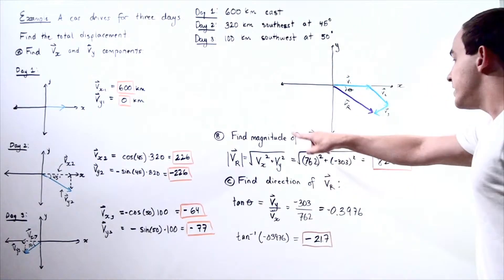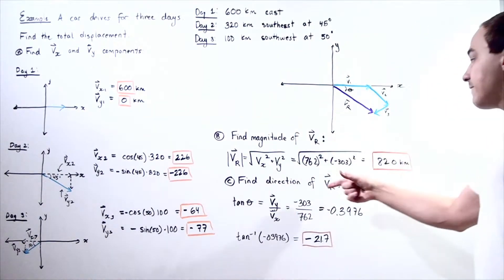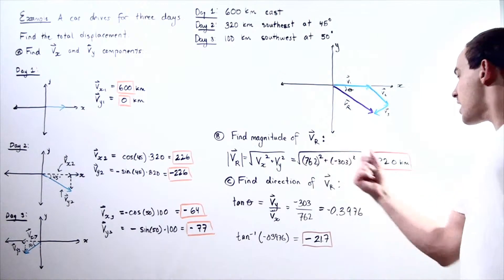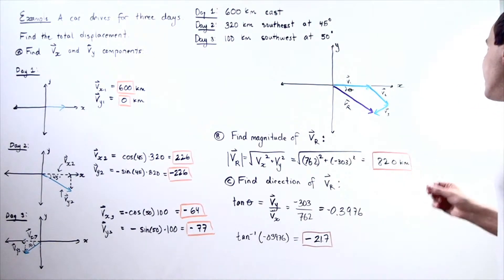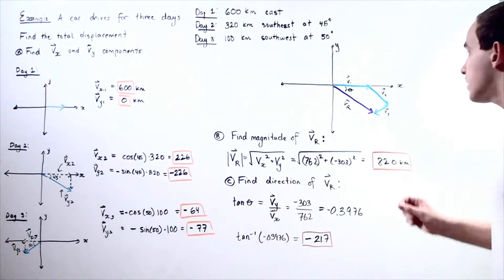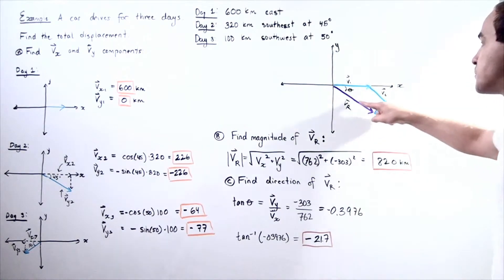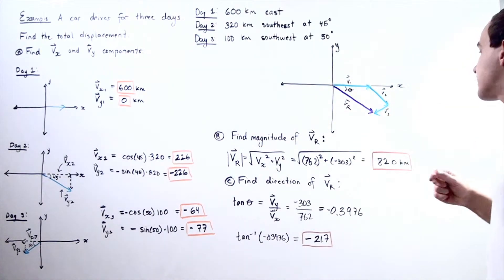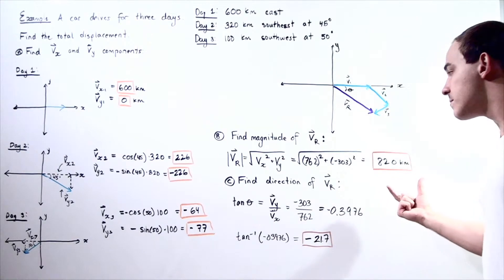Moving to part B, we find the magnitude of our resultant vector using the formula: |Vr| = √(Vx² + Vy²) = √(762² + (−303)²) ≈ 820 kilometers. So the magnitude of the resultant vector is approximately 820 kilometers.